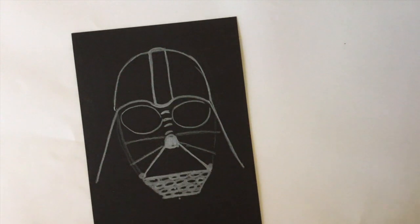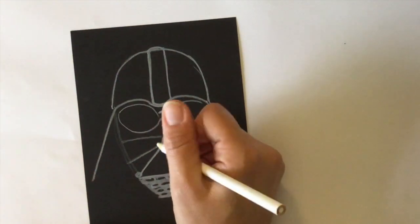Now I'll draw the inside of the respirator, four lines down with a line on the top.